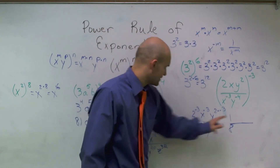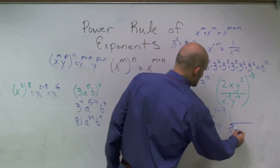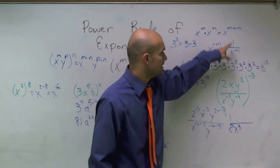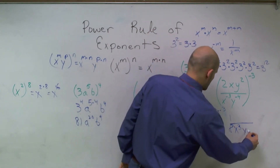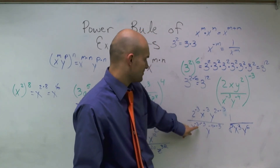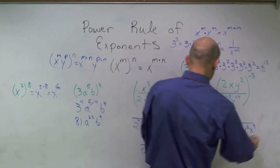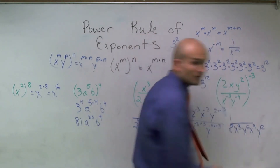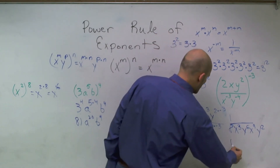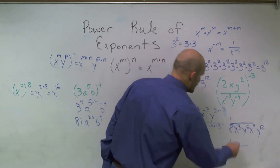So my 8 is on the denominator. x to the negative 3rd is 1 over x cubed, so x cubed goes on the bottom. y to the negative 6th means y to the 6th goes on the bottom. Then x to the negative 3 times negative 3 is x to the positive 9th — that stays on the bottom. And y to the 12th. Now I can combine: x to the 3 times x to the 9 gives x to the 12th, and y to the 6 times y to the 12 gives y to the 18th. So the answer is 1 over 8 x to the 12th y to the 18th.